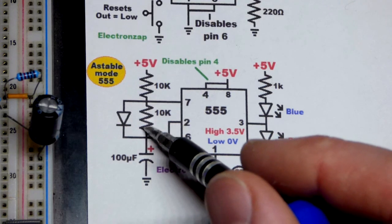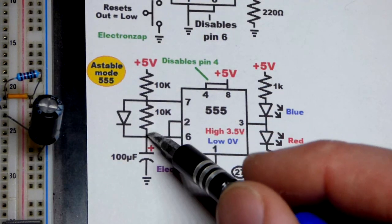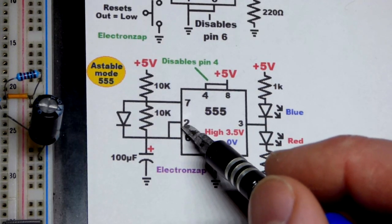So the capacitor discharges now through 10k ohms of resistance again because it can't go through the diode. And it keeps discharging until it gets to one-third supply voltage.